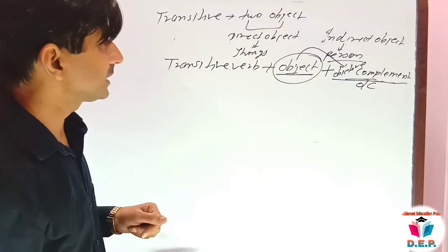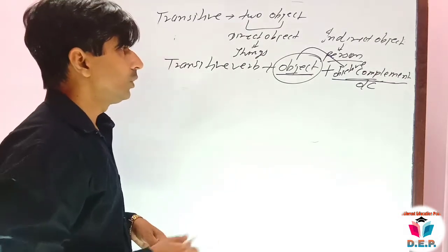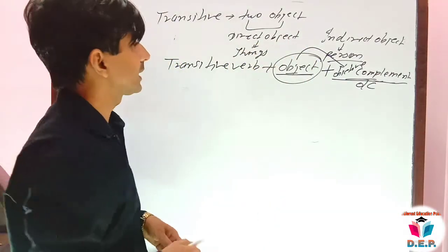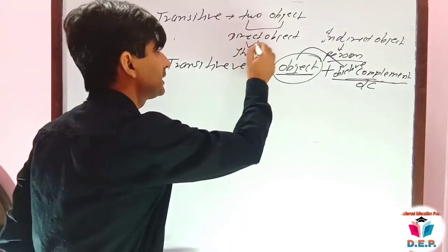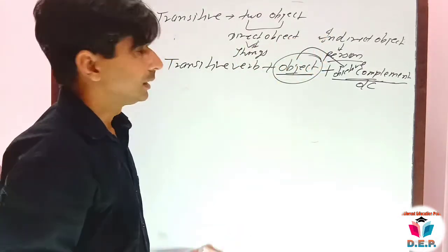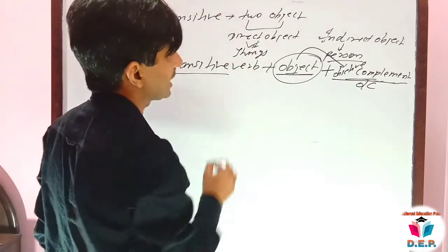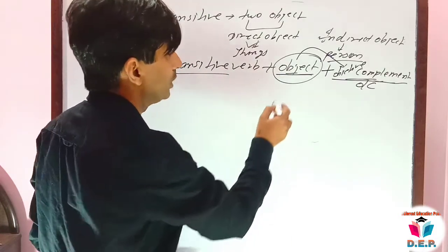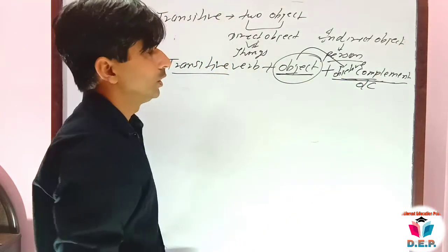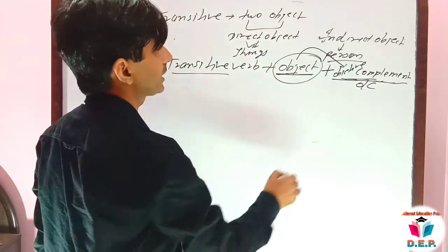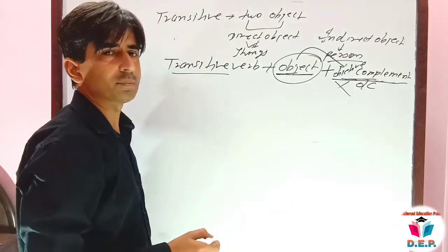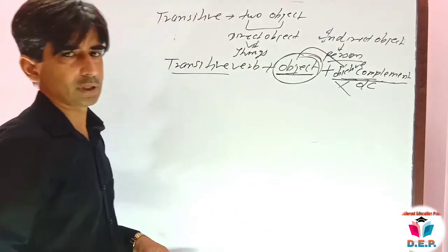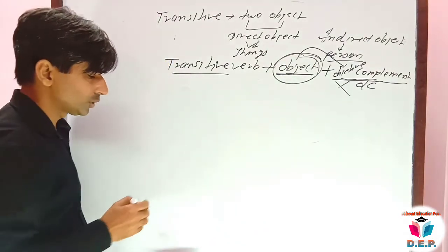We discussed direct and indirect objects because in passive voice we can convert them and interchange them. But when you have a sentence and convert it to passive, the object with OC — you need to remember that OC never becomes the passive subject; only the object can become the passive subject.